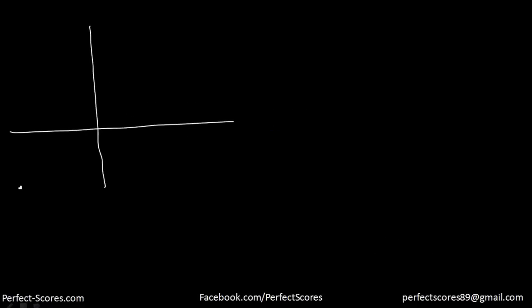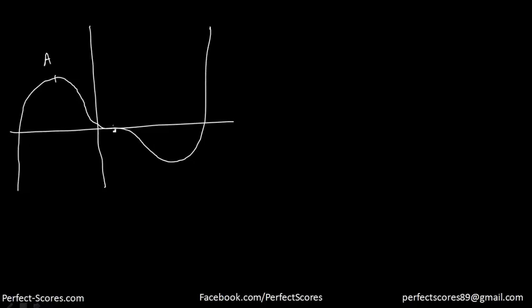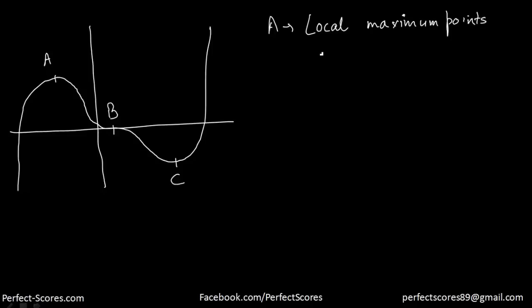Let's suppose we have a curve that comes here, drops, changes its orientation, and then goes up again. There are a few points — let's say point A, point B, and point C. Point A is actually the local maximum point. It's not the maximum point for the whole curve, but it's a local maximum. A local maximum point is a point at which the curve is stationary — it's not increasing or decreasing — and after this point the curve starts to decrease. Before it was increasing, after it starts decreasing — that is the local maximum point.